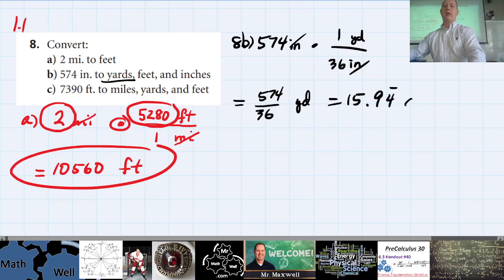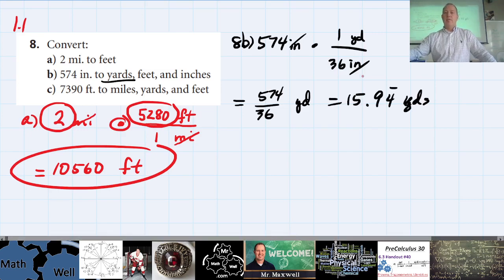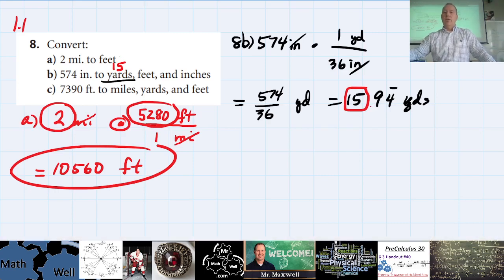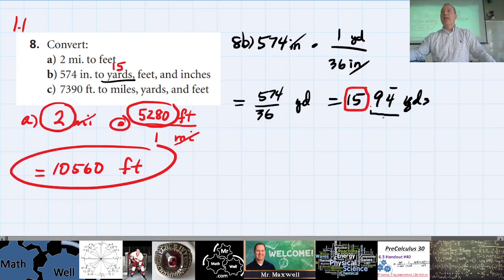We're not done yet, but we do know we have 15 full yards. So the answer for full yards is 15. Now let's deal with the rest of the value — I'm going to focus on the 0.94̄ repeating yards.